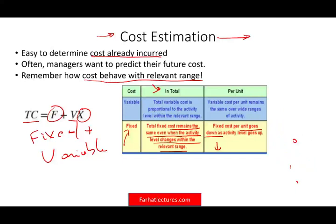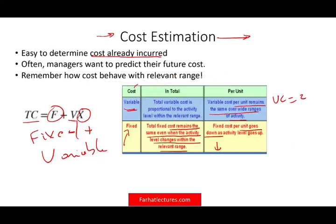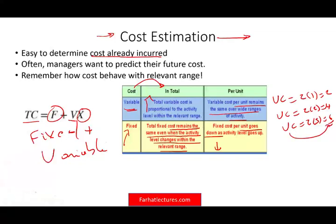Variable cost per unit stays the same. If your variable cost is $2 per unit, each unit you produce costs $2. However, variable cost in total changes — if you produce one unit it's $2, two units it's $4, three units it's $6. As activity goes up, total variable cost changes, but the $2 per unit stays the same. We're always discussing this within the relevant range.